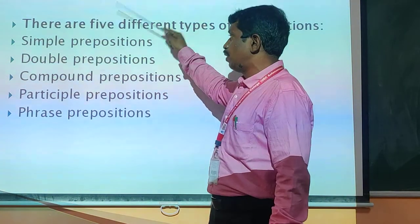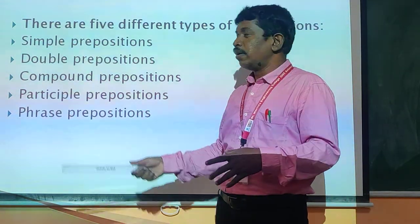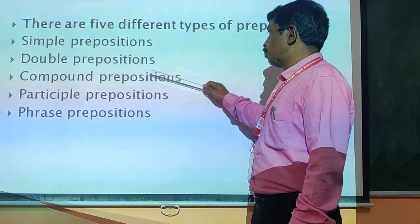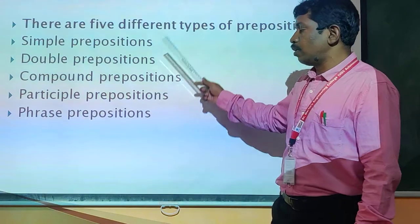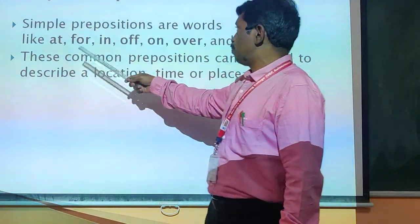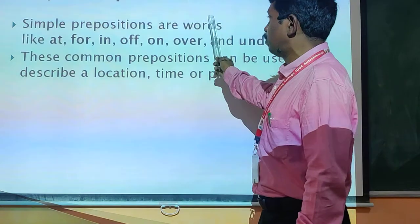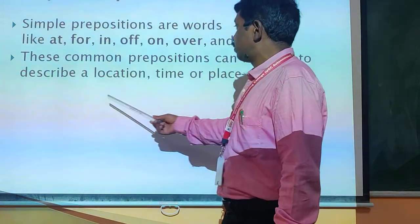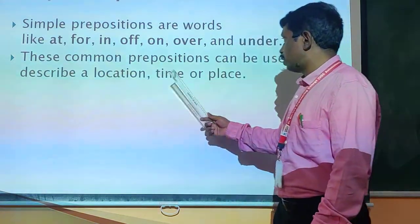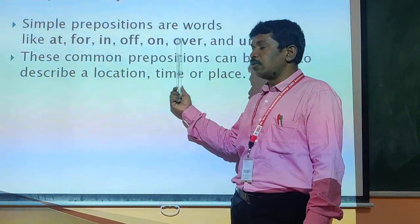Types of prepositions — there are five different types. So far we have seen sample prepositions, but here we will go through different ones: simple prepositions, double prepositions, compound prepositions, participle prepositions, and phrase prepositions. Simple prepositions are words like at, for, in, off, on, over, and under. These common prepositions can be used to describe a location, time, or place. Simple prepositions include: at, in, on, for, before — all are simple prepositions.